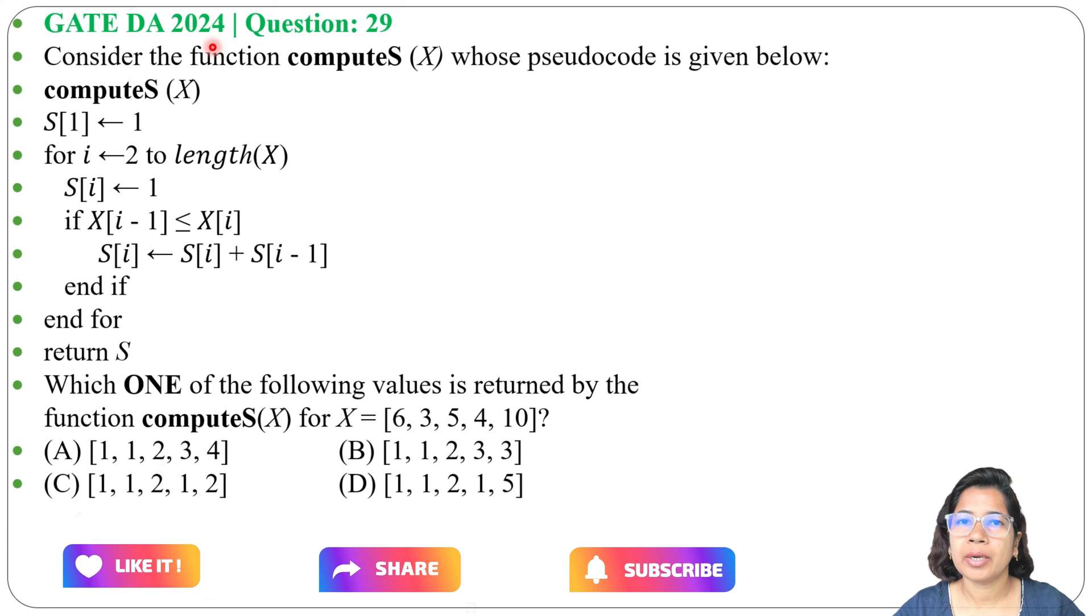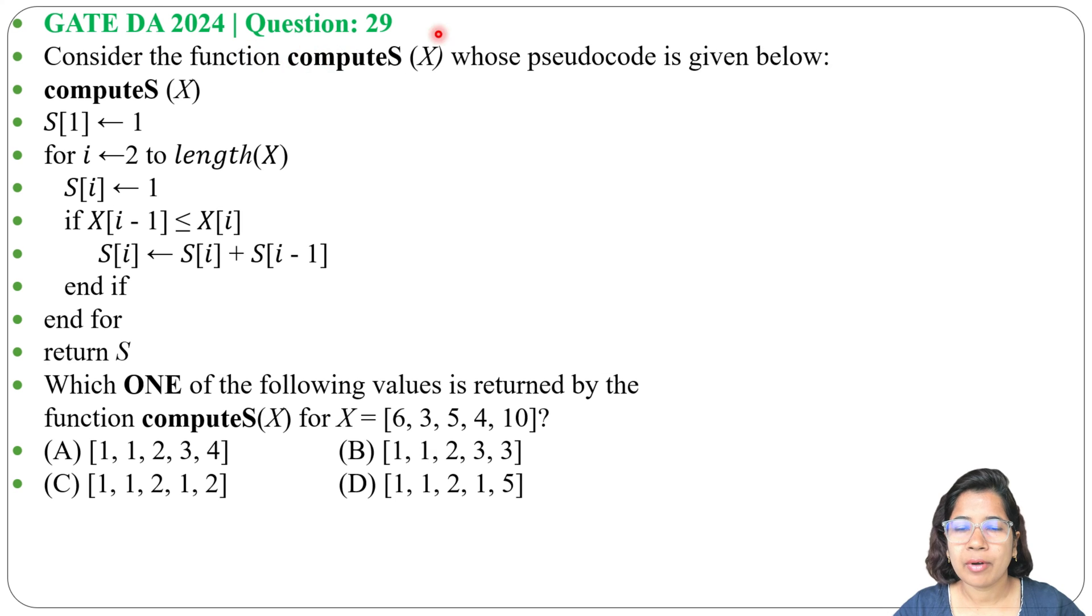Let's solve a previous algorithm question. This question was asked in GATE DA 2024, question number 29. Consider the function computeS(X) whose pseudocode is given below. Which one of the following values is returned by the function computeS(X) for X = [6, 3, 5, 4, 10]?